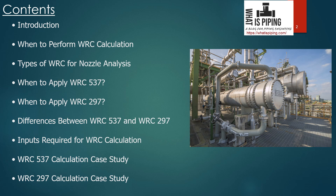Then we will cover when to apply WRC 537 and when to apply WRC 297 — meaning the situations in which each bulletin is used. After that, we will look at the differences between WRC 537 and WRC 297, and then the inputs required for WRC calculation: what inputs are needed before starting the analysis and where to obtain those values.